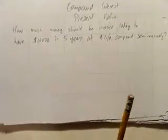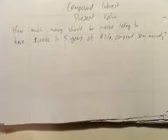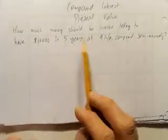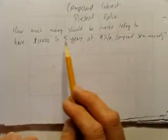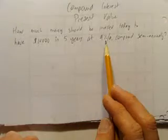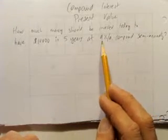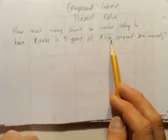How much should it be worth today so you get the result you want in the future? In this case, how much money should be invested today to have $10,000 in five years at 9% interest per annum or 9% interest per year compounded semi-annually?